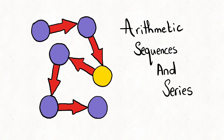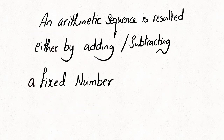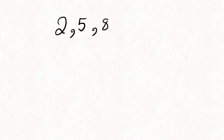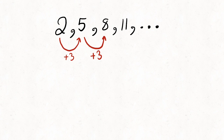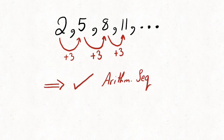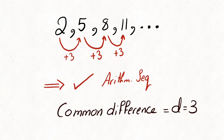Arithmetic sequences and series: when you add or subtract a fixed number you have an arithmetic sequence. For example, take the sequence 2, 5, 8, 11. The difference between two consecutive numbers is always 3, so this is an arithmetic sequence and the common difference d is equal to 3.